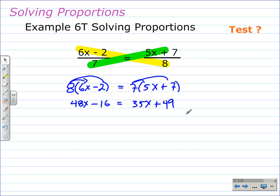Now we have an equation with variables on both sides. So we eliminate one of the variables from one of the sides by subtracting, and in this case I'll subtract 35x from both sides. 48x take away 35x gives 13x. Bring down the minus 16, bring down the equal sign, bring down the 49.